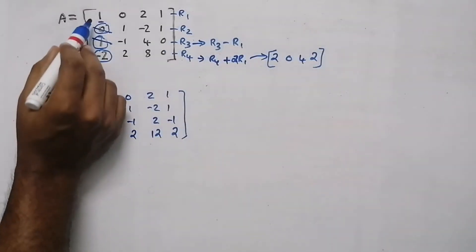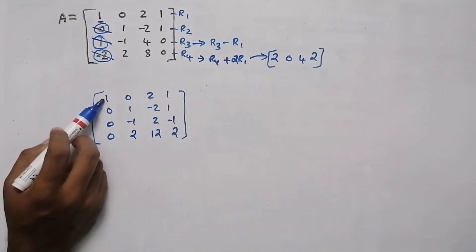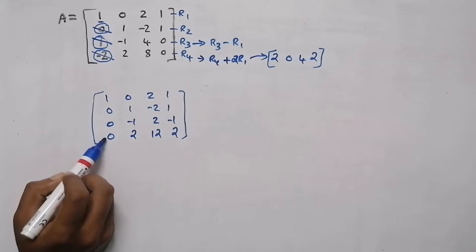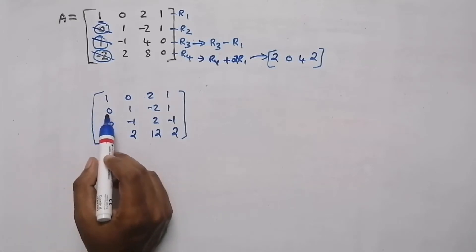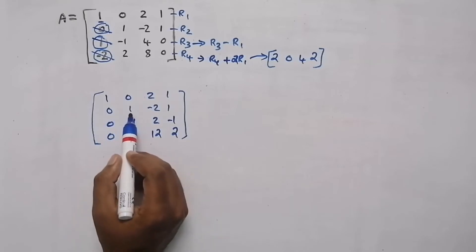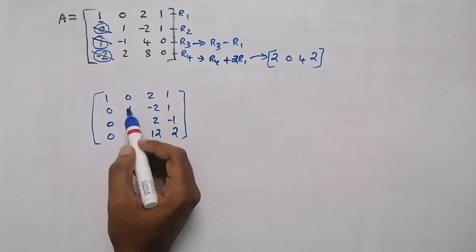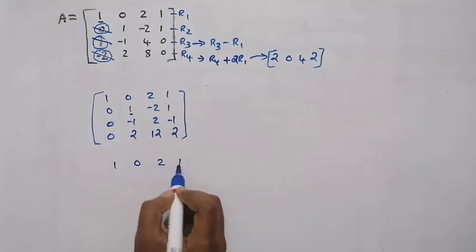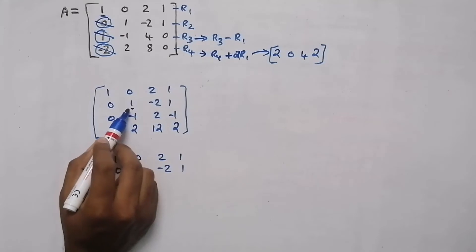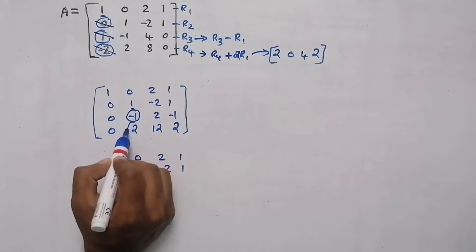Now we have made all the elements under the leading element as 0. Here all elements are 0 — this was the leading element in the first row. Now take the second row. The first non-zero element in the second row should always be equal to 1. Here it is already 1, so we can write both rows: 1, 0, 2, 1 and 0, 1, minus 2, 1. Now we need to make all elements under this leading 1 equal to 0.